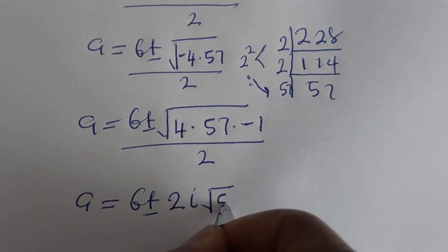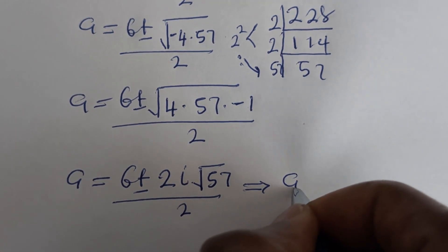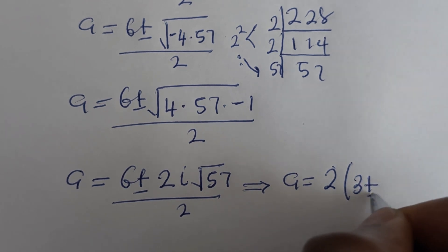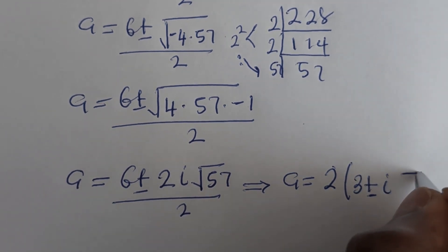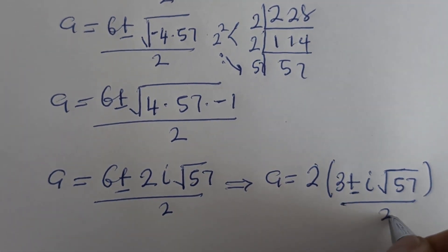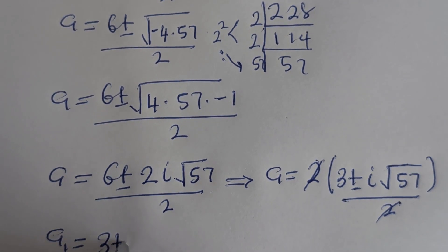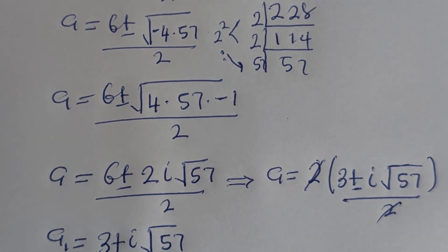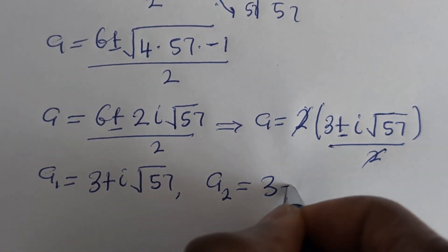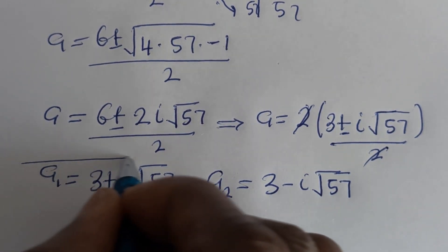Therefore A equals 6 plus or minus the square root of 4 is 2, square root of minus 1 is i, times the square root of 57, all over 2. This simplifies to A equals 3 plus or minus i times the square root of 57. So A₁ equals 3 plus i√57 and A₂ equals 3 minus i√57.